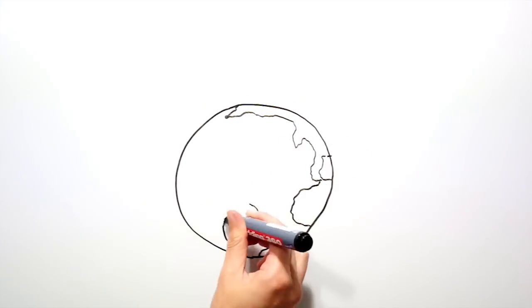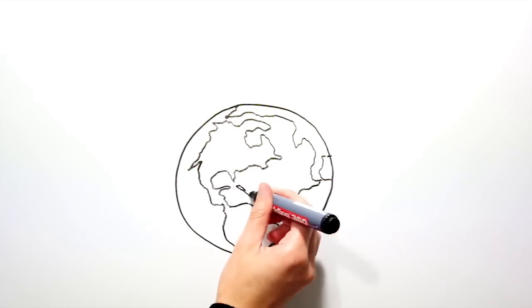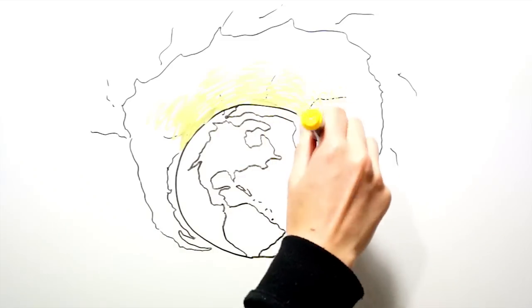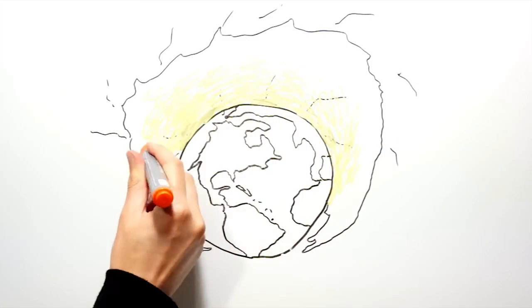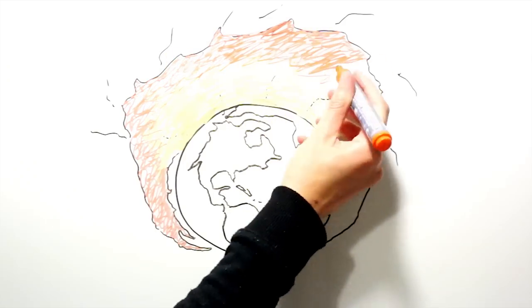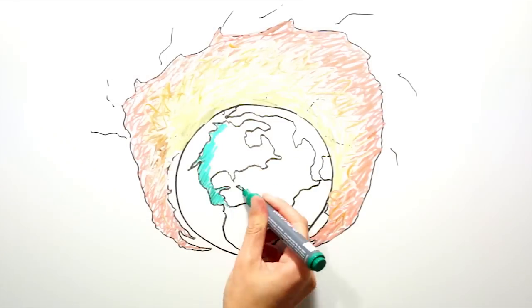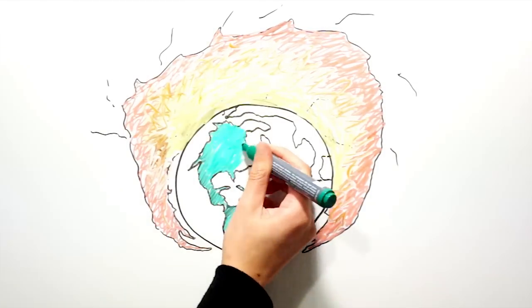The event which will spell certain doom for our planet is the dying of our star, which will happen in about 5-7 billion years from now. As the star dies, it will expand and get very close to our planet, which will burn its surface. The sun may even expand big enough to engulf our planet entirely.